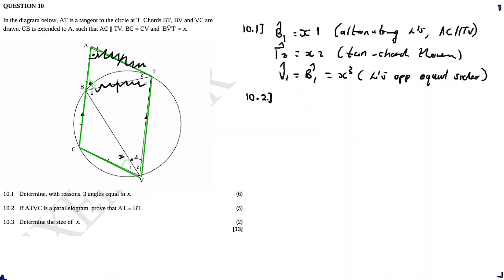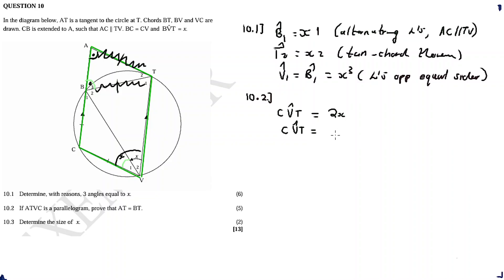I'll start by calculating angle A. Angle CVT as a whole equals 2x — that's x plus x. Angle CVT equals angle A, and they are both equal to 2x. How do I know? We are told that ATV is a parallelogram, so opposite angles of a parallelogram are equal.